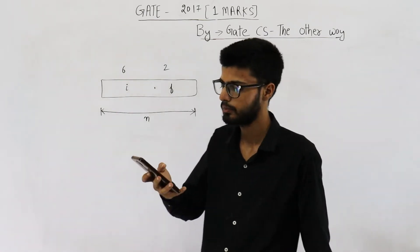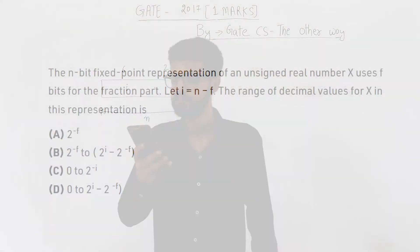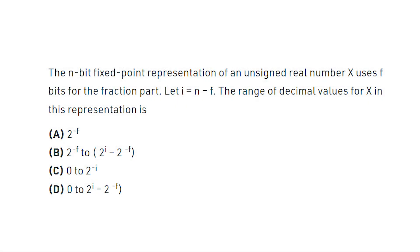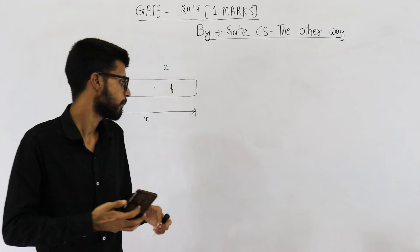The n-bit fixed-point representation of an unsigned real number x uses f bits for the fractional part. Let i equal n minus f. The range of decimal values of x in this representation is — we are required to find out the range of this number system.